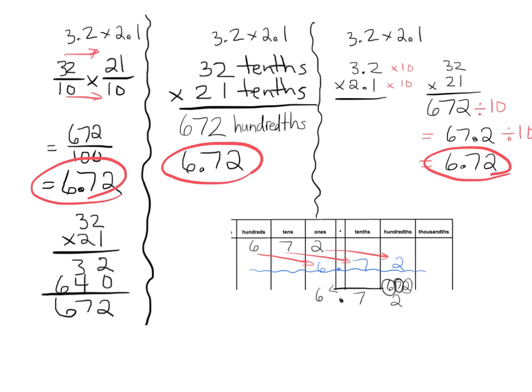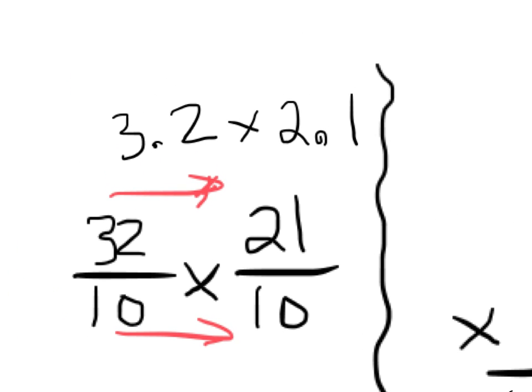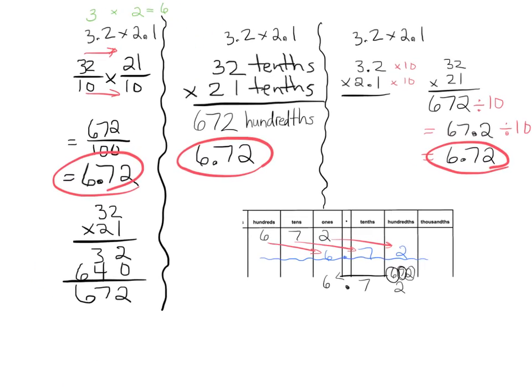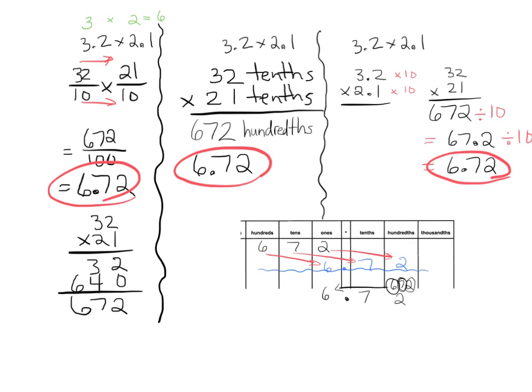Now, you know, the thing is, we've got to think about this. Does that answer make sense? So when we look at our original problem, right here, our original problem, 3.2 times 2.1, well, let's do this in green. Well, 3.2 is about 3. 2.1 is about 2. So when we multiply 3 times 2, we get 6. So we know our answer should be about 6. And sure enough, our answer of 6 and 72 hundredths is reasonable. It is close to our estimation. So we know we're good.